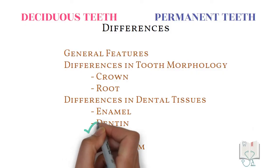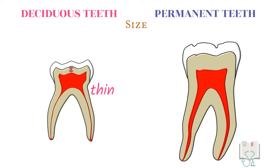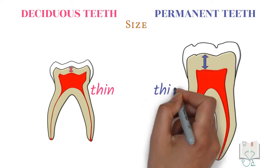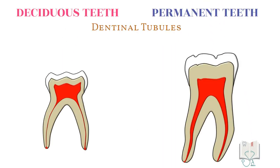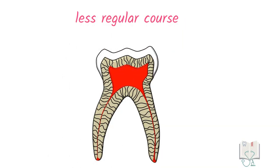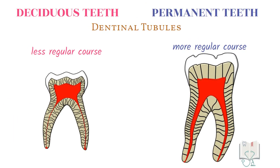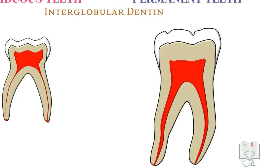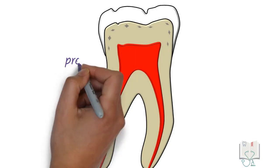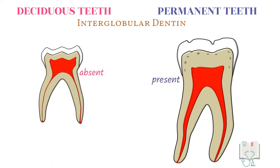Next, differences in dentine. Just like enamel, in deciduous teeth, dentine is also thinner than that in permanent teeth. In deciduous teeth, the course of dentinal tubules is less regular than the regular course seen in permanent teeth. However, the hypocalcified areas called interglobular dentine are present in permanent teeth but absent in deciduous teeth.